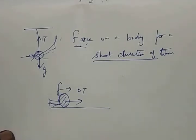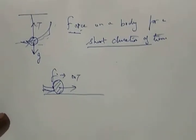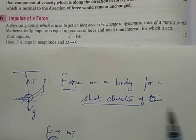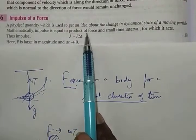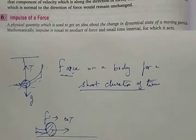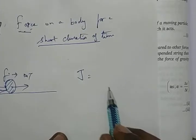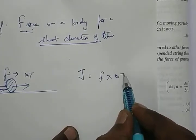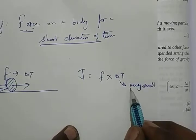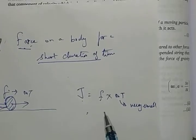In simple terms, you can say you slap a person — force given for a short duration of time — that is impulse. Mathematically, impulse is equal to the product of force and the small time interval for which it acts. It is given the symbol J: J equals F into delta t, and this delta t should be very small. Impulse is a vector quantity.